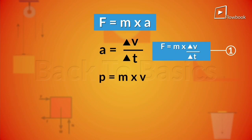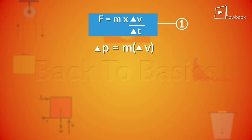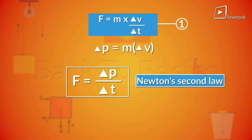Therefore, del p is equal to m into del v. Substituting this in equation 1, we get force is equal to del p by del t, which is also what Newton's second law tells us.